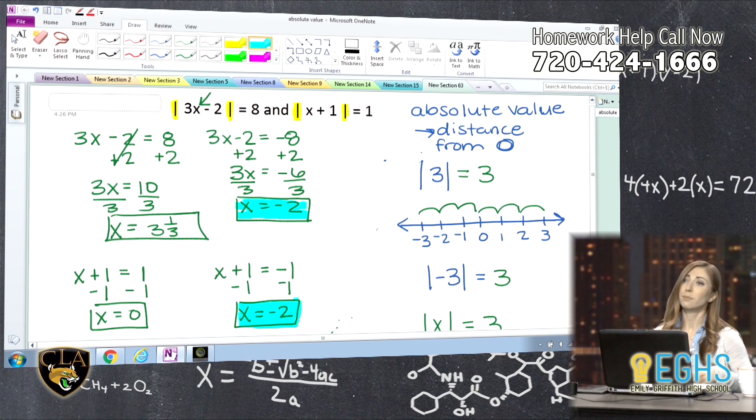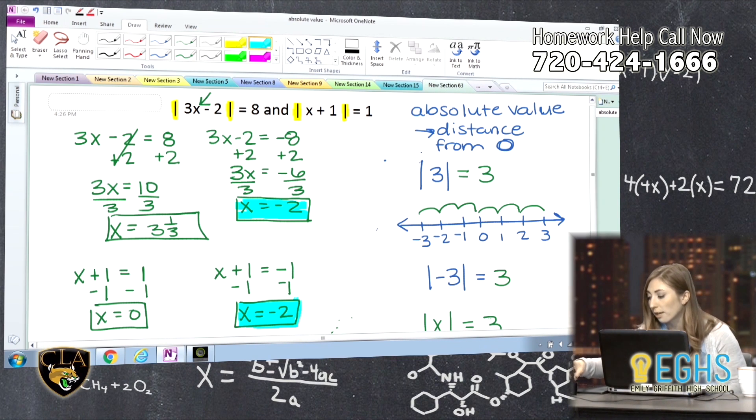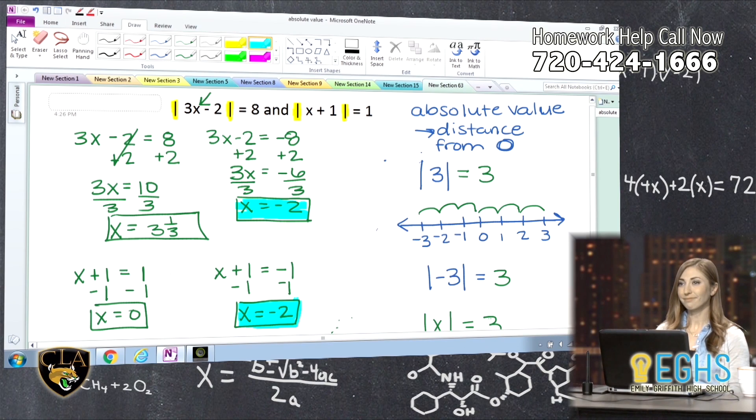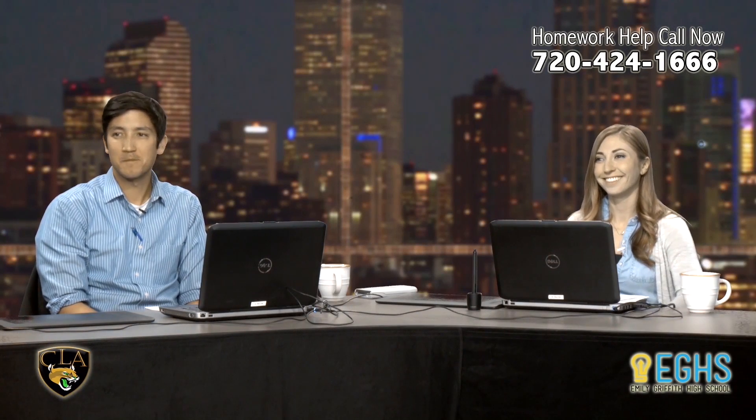So hopefully that helps, and then also hopefully that helps with understanding what does absolute value mean, and then you saw the procedure and the process to solve them. We solved for the both positive side, and we solved for the negative side, and hopefully you saw why. There you have it. Very nice.